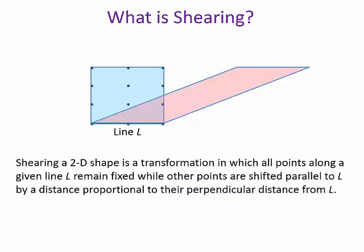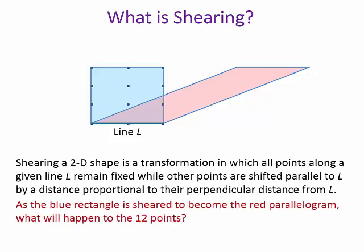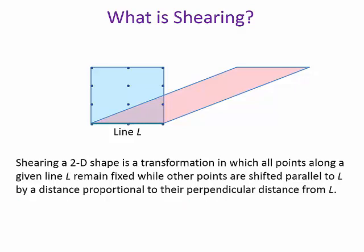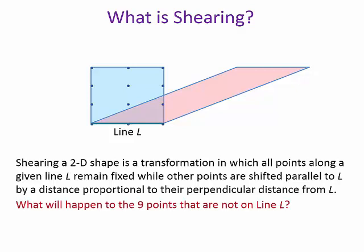Let's imagine what will happen to these 12 points when we shear the rectangle. First, think about what will happen to the 3 points on line L. Did you predict that they will remain stationary? What about the other 9 points that are not on line L? They are shifted parallel to L by a distance proportional to the perpendicular distance from L.